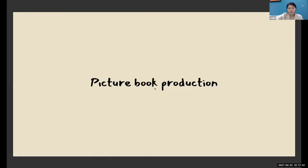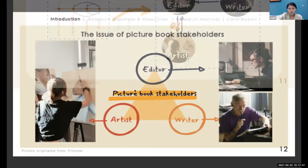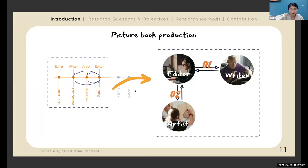Regarding the production process: at the beginning, the editor hunts for great stories from writers, or sometimes writers send their stories to the publishing house. Once the editor accepts a story, they find a suitable artist to draw it. Basically, the artist is the last one to finish the story.